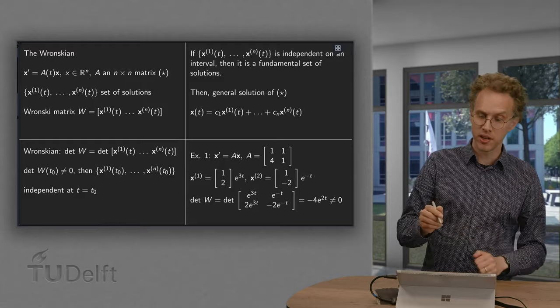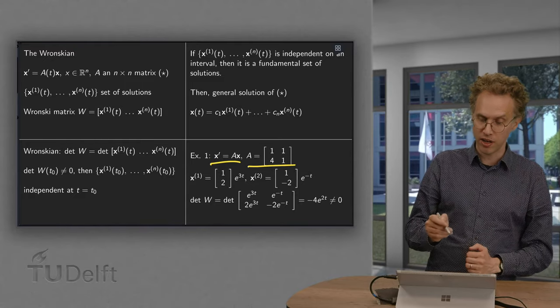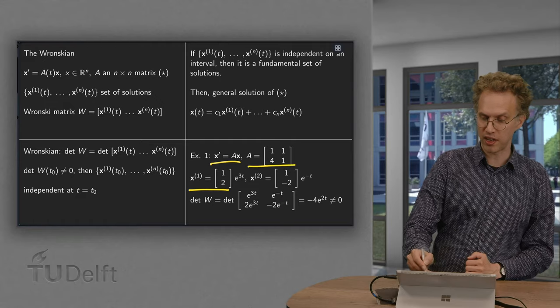Now let's do a small example. Here we have x' equals A times x, here we have a matrix A. Now we have found two solutions, x^(1) and x^(2).